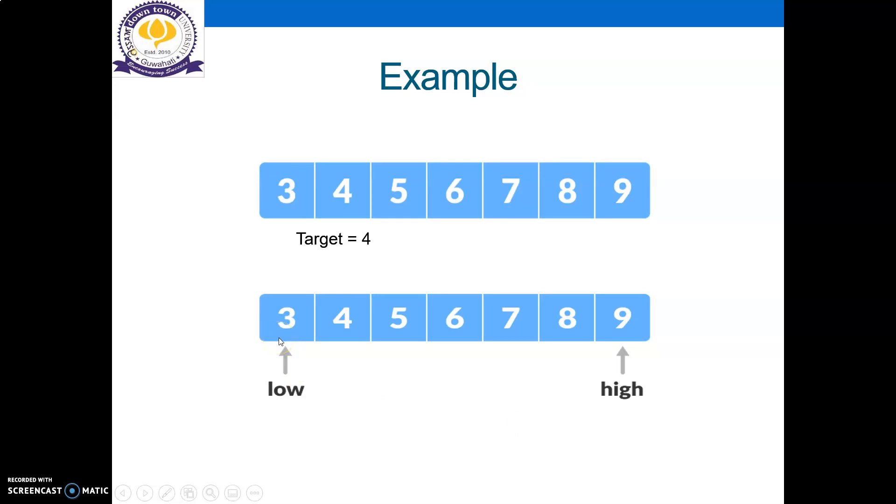For implementation of binary search, we have to decide the low and high bound. The low will be the first element, that is the lowest value, because we already know that the array is already sorted in ascending order.